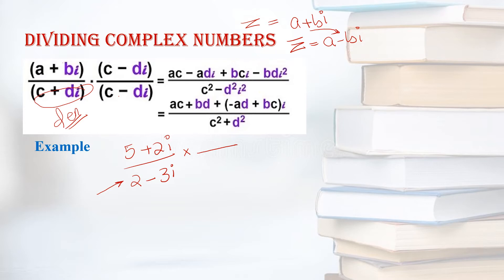So here the conjugate will be 2. It's negative 3i, so you will write plus 3i. Whatever you write in the numerator to balance the equation, you have to write it in the denominator also.